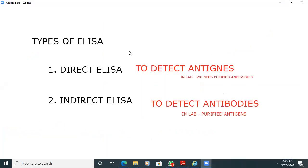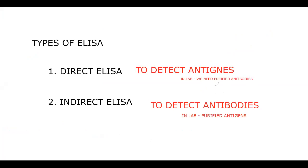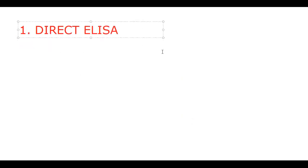Now getting into the topic. In ELISA, to detect the antigen we need purified antibodies — produced by hybridoma technology as monoclonal antibodies. Now, direct ELISA. Before going to the procedure, I want to show an animation, then continue with the direct ELISA step by step. Direct ELISA includes two subtypes: sandwich ELISA and competitive ELISA.